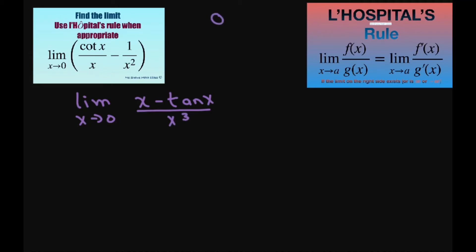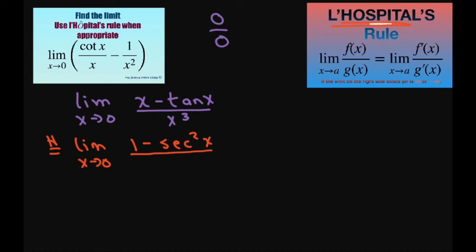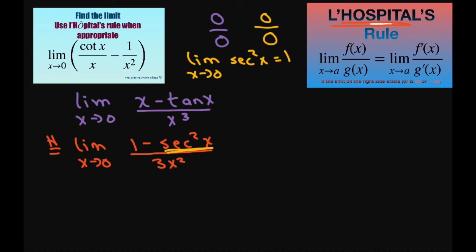Now this has the form zero over zero, so I can use L'Hôpital's rule here. Applying L'Hôpital's rule, the limit as x approaches zero gives us 1 minus secant squared of x, divided by 3x squared. When you take this limit, the limit as x approaches zero of secant squared of x equals one, so you get one minus one equals zero, and the denominator is also zero. So we're going to apply L'Hôpital's rule again.